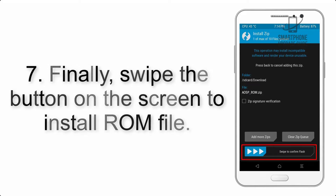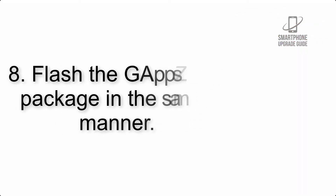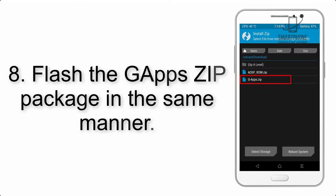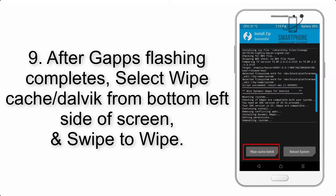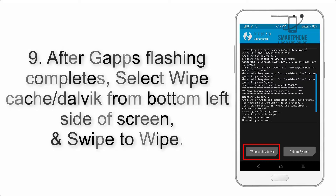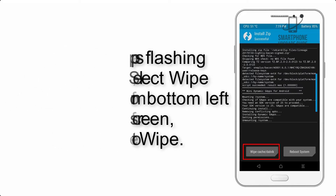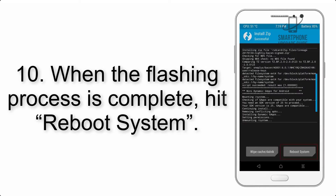Step 7: Finally, swipe the button on the screen to install the ROM file. Step 8: Flash the gapps zip package in the same manner. Step 9: After gapps flashing completes, select Wipe Cache and Dalvik from the bottom left side of the screen and swipe to wipe.